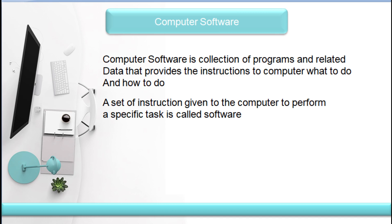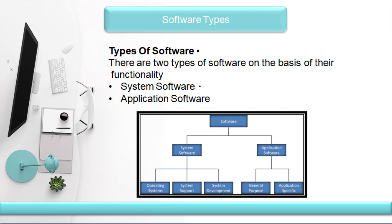We will create software in the computer. A program is a set of instructions given to the computer. If we are working on the computer, we will create some instructions. We have two types of software: system software and application software. We will talk about system software and application software.